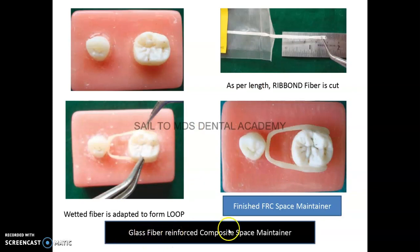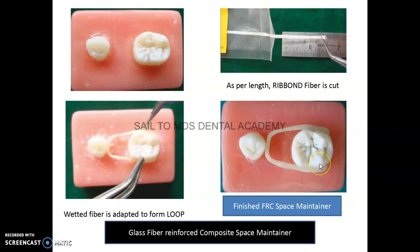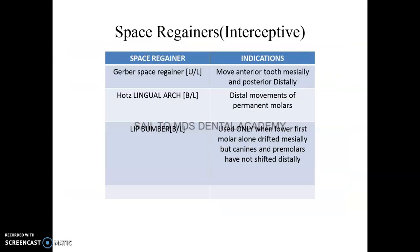The latest space maintainer is the glass fiber reinforced composite (FRC) space maintainer. The steps are: cut the ribbon fiber, wet it with unfilled resin, adapt it in the form of a loop, and then cure it with composite. This gives the finished FRC space maintainer.